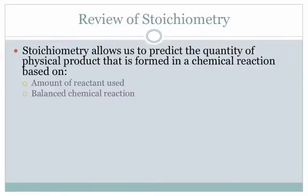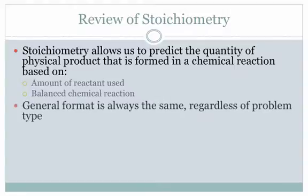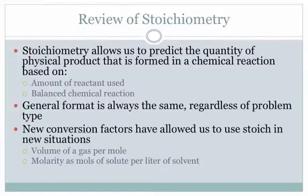To wrap up our review of stoichiometry: stoichiometry is a calculation that allows us to predict the quantity of physical product formed in a chemical reaction. That prediction is based on two factors — the amount of reactant used and the balanced chemical reaction itself. No matter what the problem was, the general format was always the same. What allowed us to do that was the fact that each new setting simply required a new conversion factor. For example, converting to volume of gas needed a conversion factor to volume; the solutions chapter required molarity as another conversion factor.